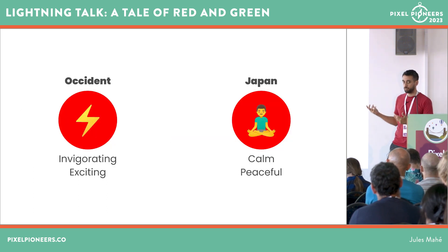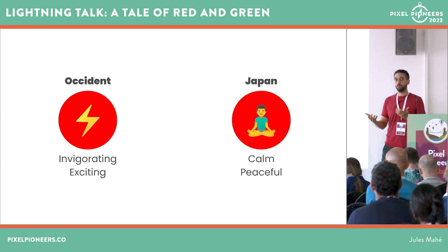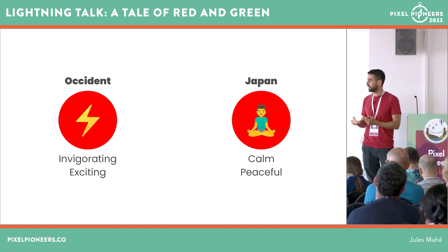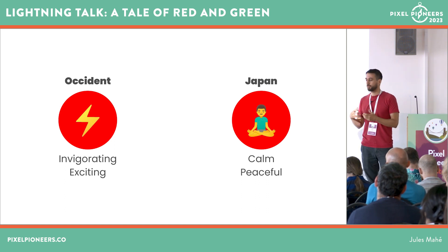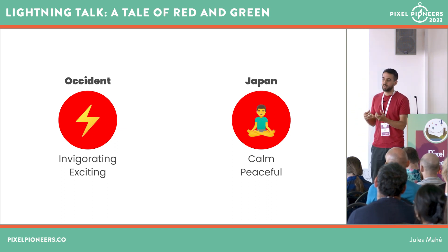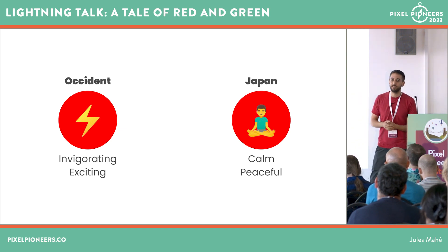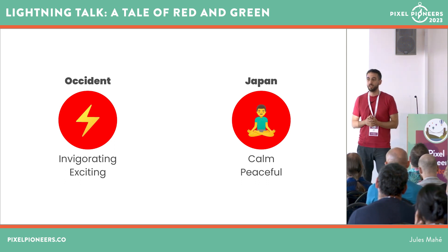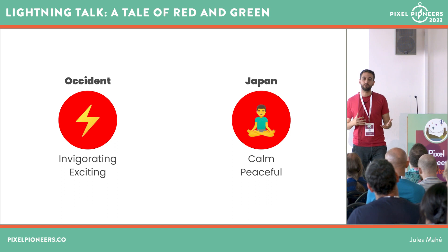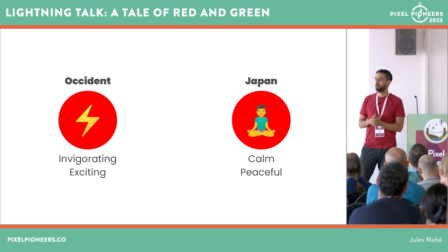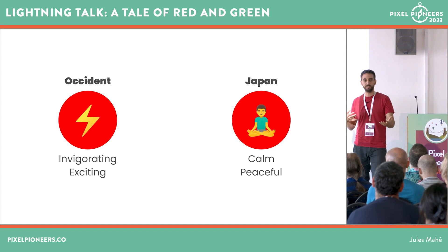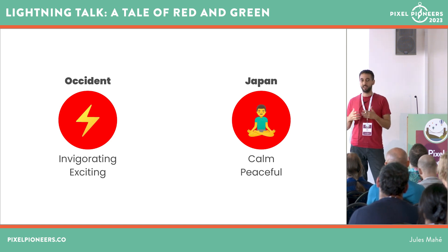For example, let's take red. It could be obvious for a lot of people, especially in the Occident, that red is a very powerful, invigorating and exciting color. But if you look at the other side of the planet — say in Japan — people would tell you that red is more like a calm and peaceful color. So it's very difficult to establish a shared knowledge or values about what a color should say as a message for your brand or your design.